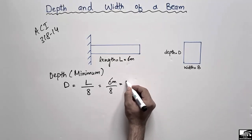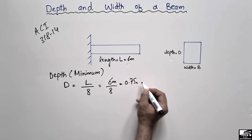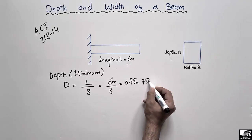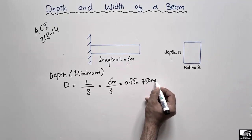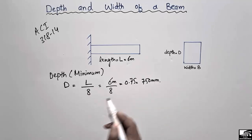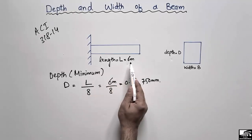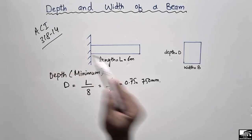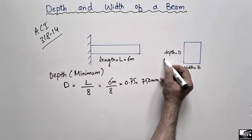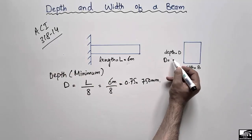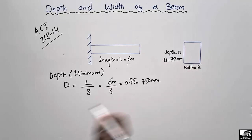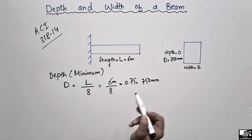it comes out to be 0.75 meters, or if we multiply by 1000 we get 750 millimeters. So if you have a cantilever beam of length 6 meters, then according to ACI 318-14, the minimum depth or thickness for this beam will be equal to 750 millimeters.